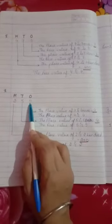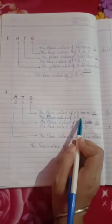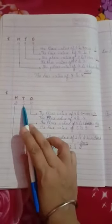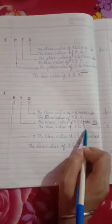Let's take another example: 254. 4 is in the 1's place. The place value of 4 is 4, and the face value is 4. 5 is in the 10's place. The place value of 5 is 5 tens, which equals 50. And the face value of 5 is 5.